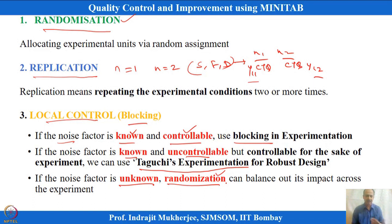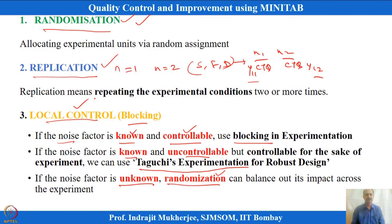Three important aspects in experimentation: one is randomization, one is replication, and one is local control (blocking). Wherever blocking is possible, block and see the effect of blocks for better interpretation—without it you may get distorted results. Always try to randomize and always try to replicate. Replication gives more precision; randomization minimizes the effect of hidden or unidentified variables. These three aspects are very important and we must be careful about them while doing experimentation.